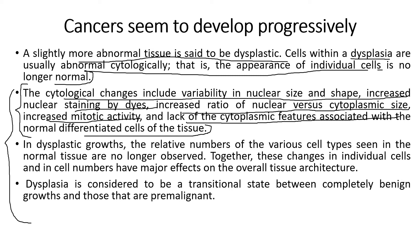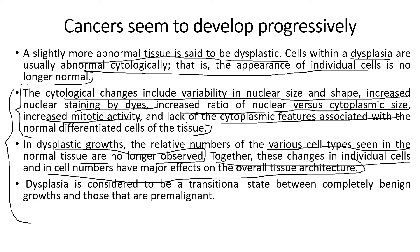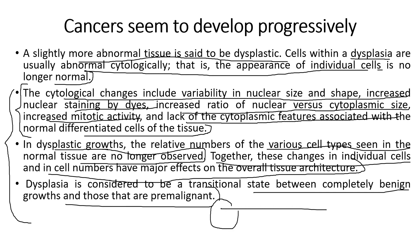In dysplastic growths, the relative number of various cell types seen in normal tissues are no longer observed — these cells possess no types that are normal in nature. Together, these changes in individual cells and cell numbers have a major effect on overall tissue architecture. Dysplasia is considered a transitional state between completely benign growth and pre-malignant growth, acting as an intermediate state from a benign tumor to a pre-malignant tissue.